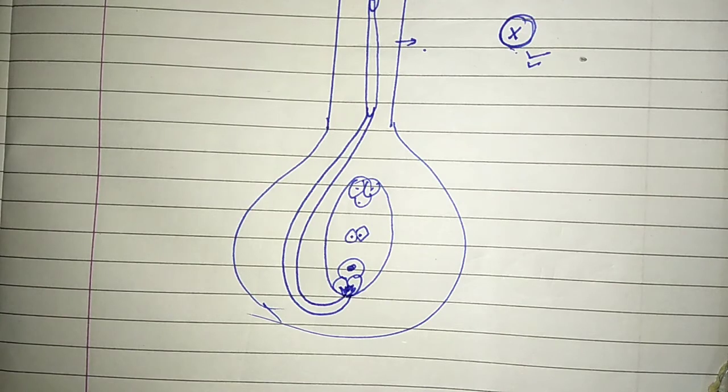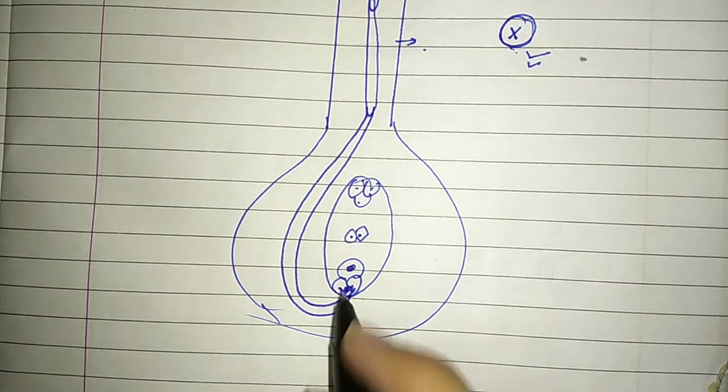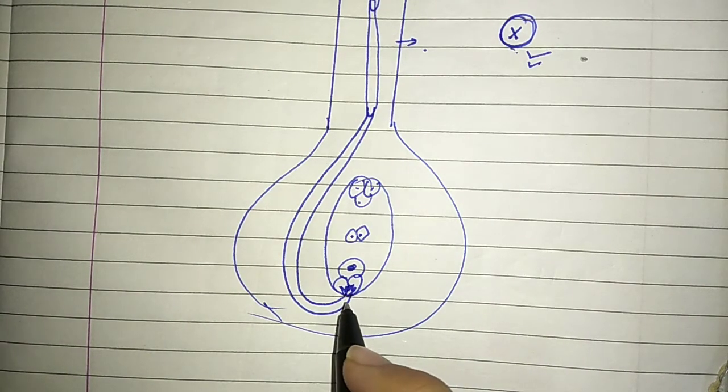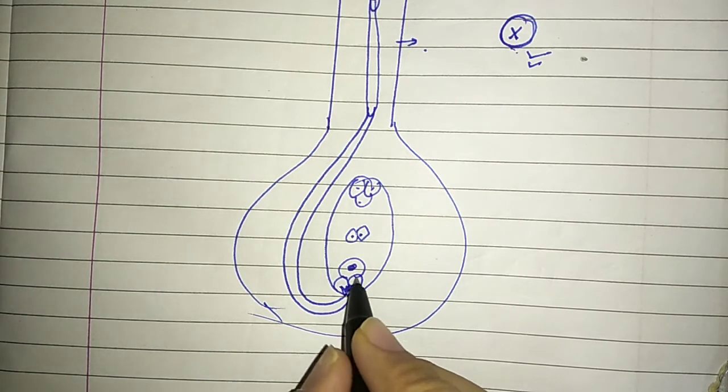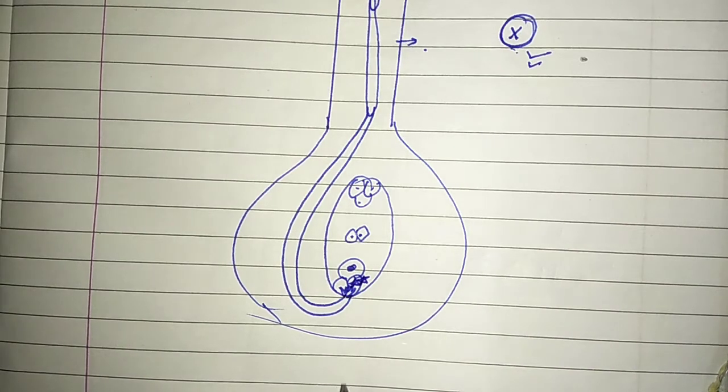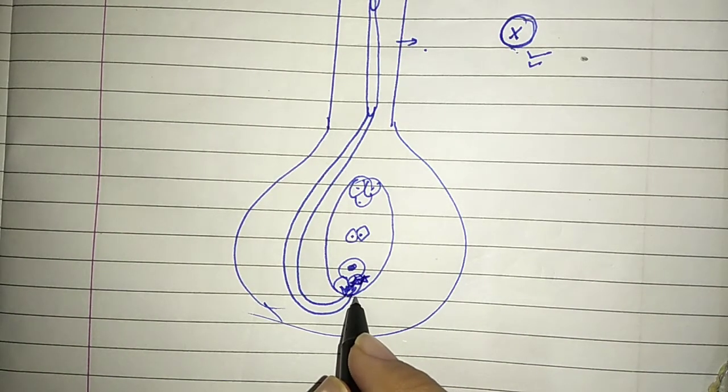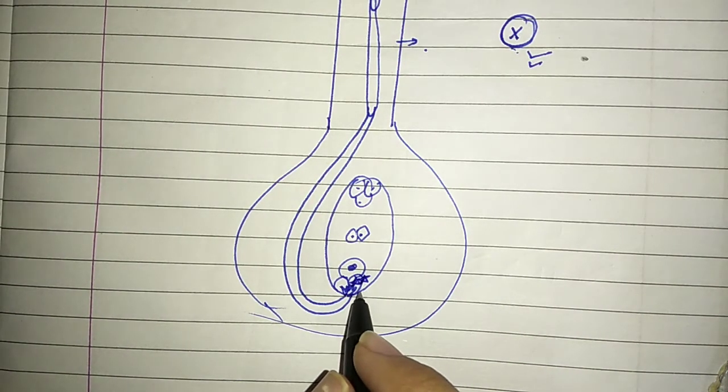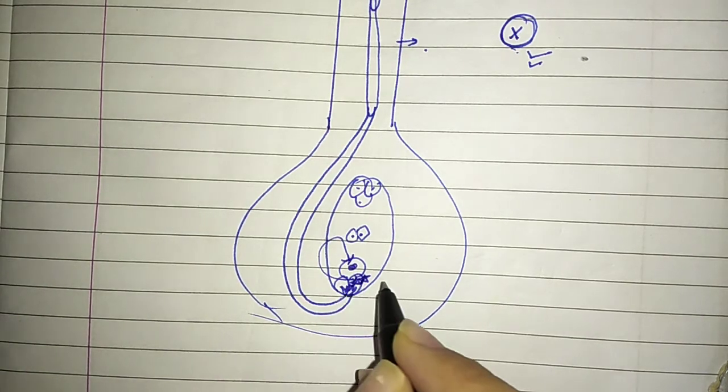From here, the pollen tube - the filiform apparatus will guide it inside the female gametophyte or embryo sac. Once it has guided it in, the male gametes are released into the cytoplasm of synergid cells. Two male gametes are released into the cytoplasm of synergid cells.